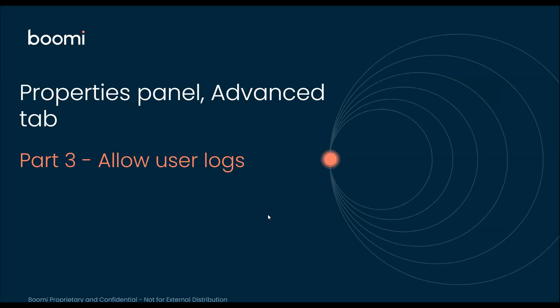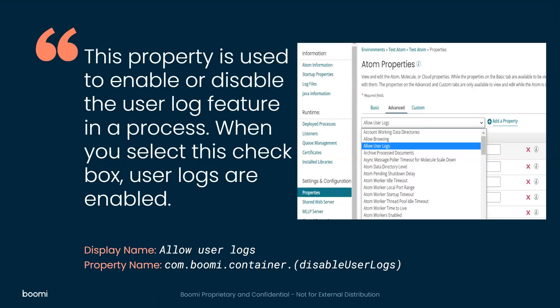Hello and welcome to the Boomi product videos. Today in this video we are going to discuss the third property from the advanced tab, which is called Allow User Logs. This property is used to enable or disable the user log feature in a process.